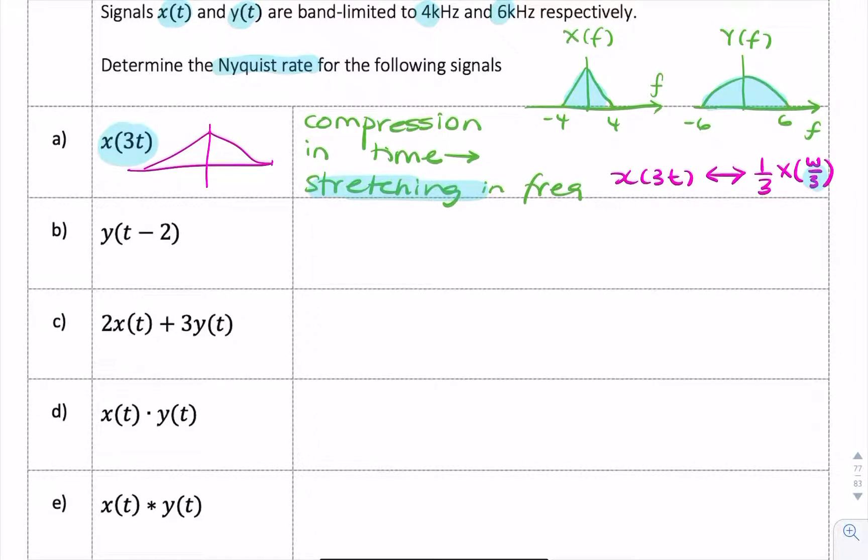So instead of having 4, we'd have 4 times 3, and we'd have minus 4 times 3. So the spectrum is 3 times as wide. So the question is, what's the Nyquist rate? The Nyquist rate is 2 times 3 times 4, that's 24 kilohertz.